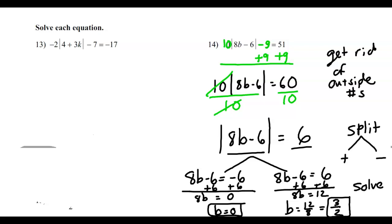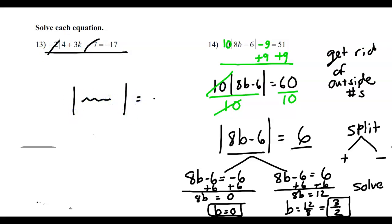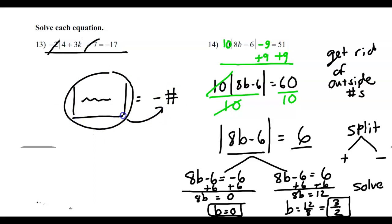Now I want to warn you of something. Let's say you get rid of the two outside numbers and you still have a negative number on the right side. Absolute value can never equal a negative. So if you ever get to the place where you have an absolute value equal to a negative, stop and say no solution. If you forget to do that, you're still going to get an answer but you'll be wrong. So watch out for that.